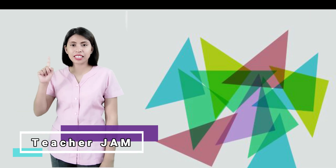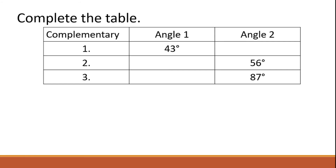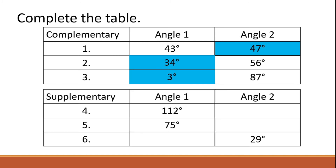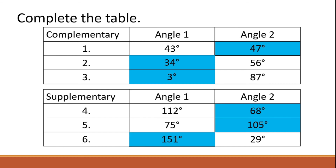Before we end, let's have an activity. Complete the table. Find the complement of the following angles: for number 1, the complement is 47 degrees; for number 2, the complement is 34 degrees; for number 3, it is 3 degrees. Now find the supplement: for number 4, the supplement is 68 degrees; for number 5, it is 105 degrees; for number 6, it is 151 degrees.